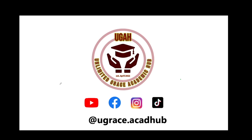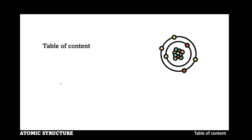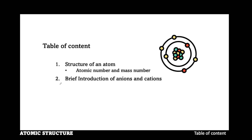Welcome to Unlimited Grace Academic Hub. In this playlist, I will explain the structure of an atom and the two unique numbers significant to an atom, that is, atomic number and mass number. I will explain a brief introduction to anions and cations. Also, I will explain the effect of electrons on the chemical behaviour of an element.